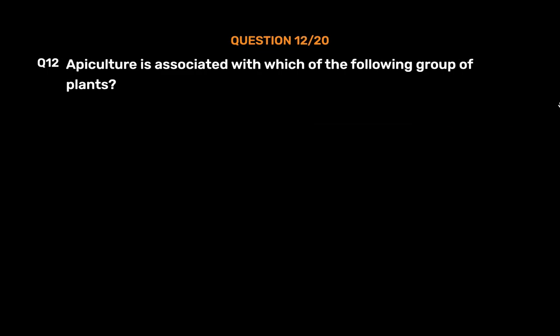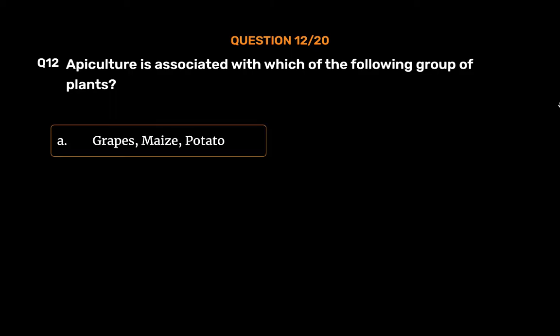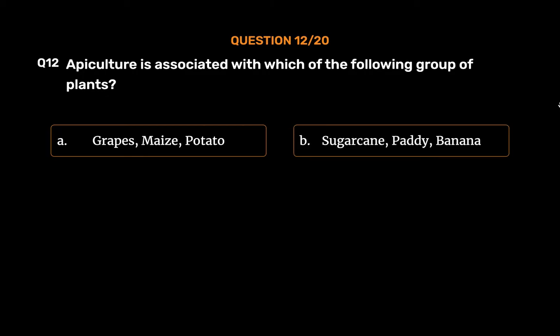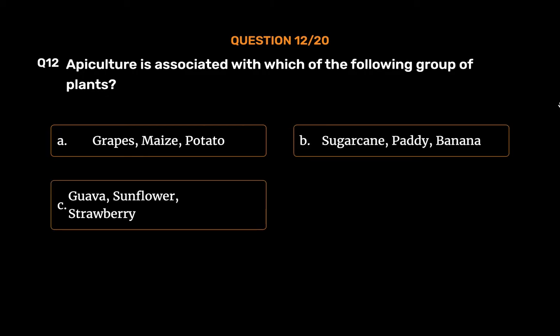Question 12: Apiculture is associated with which of the following group of plants? Option A: Grapes, maize, potato. Option B: Sugarcane, paddy, banana. Option C: Guava, sunflower, strawberry. Option D: Pineapple, sugarcane, strawberry.